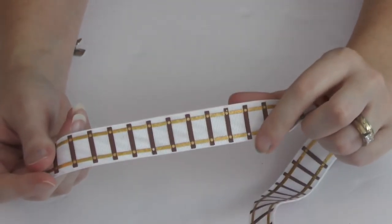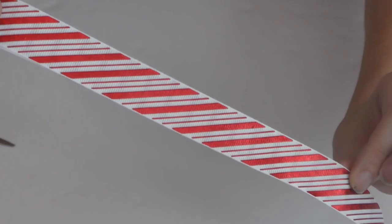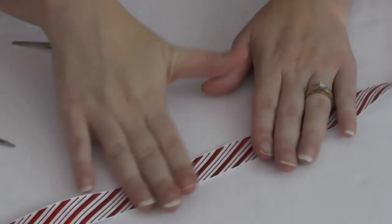And then on top of it is that railroad track. Actually working with two pieces of ribbon, and what I did was fuse the two ribbons together. I've got this candy cane stripe right here, and then of course the railroad track.